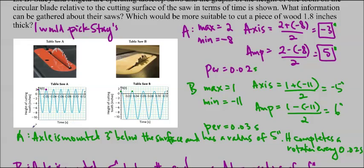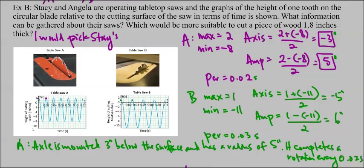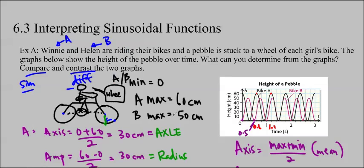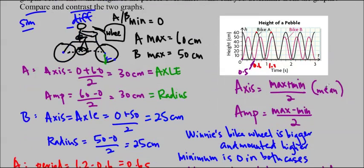Basically what we talked about today was how to find the axis and the amplitude and how to find the period. Use the max and the min and the formula, which is right here. Max plus min over 2 and max minus min over 2. Thanks for watching. Bring any questions you have to class. I'll see you soon.